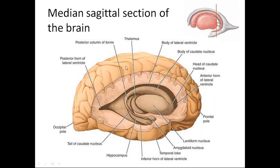Now, the same picture after removal of the corpus callosum shows the lateral ventricle, which is a C-shaped cavity. It consists of the anterior horn, inferior horn, posterior horn, and central part. You can also see the caudate nucleus, lentiform nucleus, amygdala nucleus, and hippocampus. The caudate nucleus consists of a head, body, and tail.